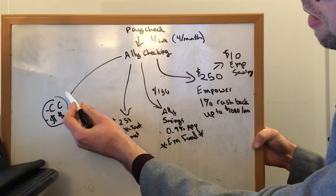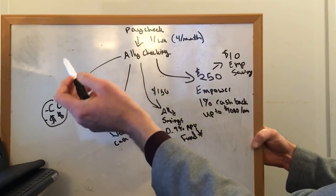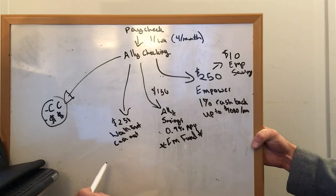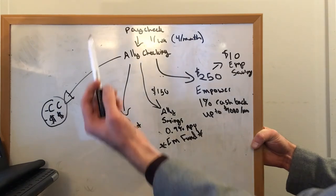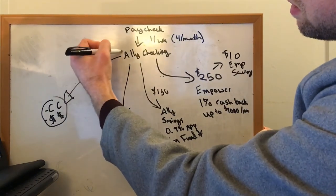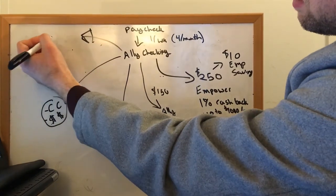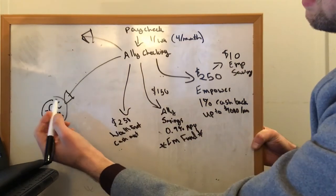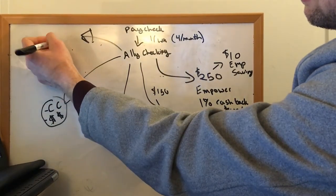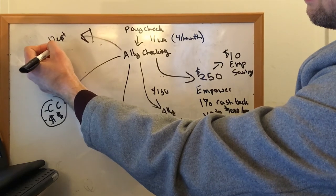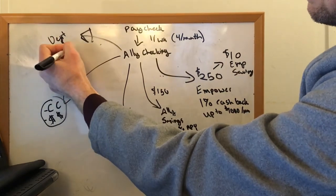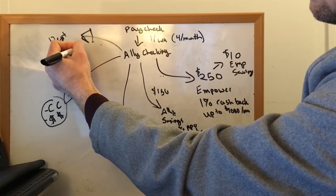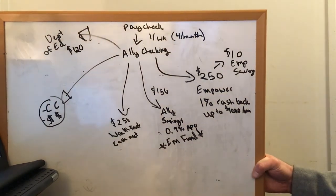And then I have money going over here to pay off balances. That varies, usually between a thousand and two thousand. Right now I only have about $8,000 of credit card debt left. And I also have student loans over here. That's pretty small. Let's call this department of education. And that's like about $120 a month.